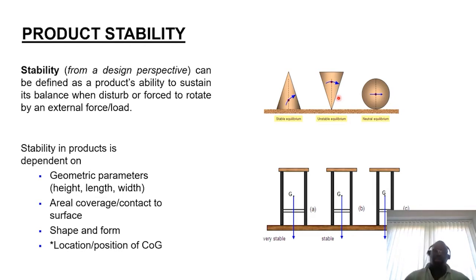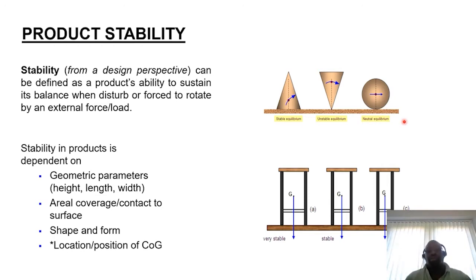We need to bear that in mind. When it comes to the third diagram, we're talking about neutral equilibrium — no matter how the object rotates, the distance between its focal point of contact on the surface and the position of the center of gravity stays the same, thus neutral. The geometric profile, shape, and form also has a bearing on how stable an object is likely to be. The last variable is the location and position of the center of gravity, which is dependent on the size of the product.